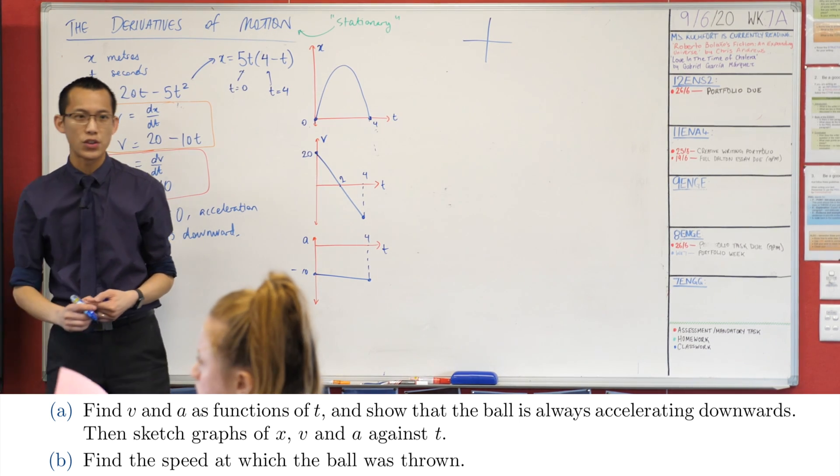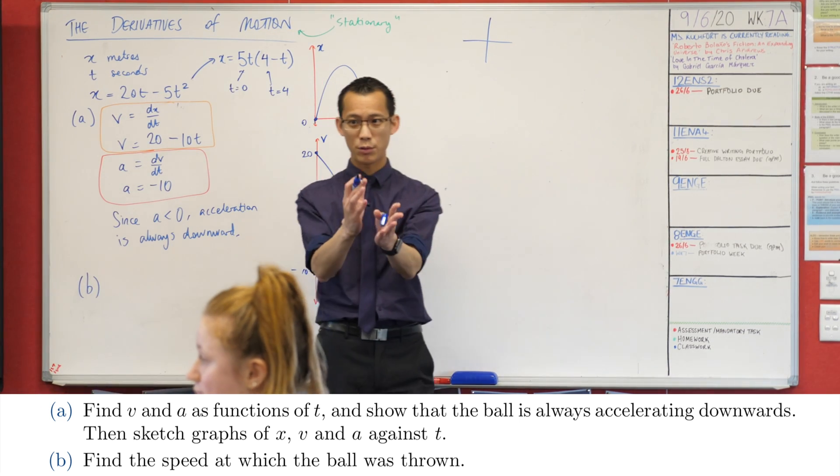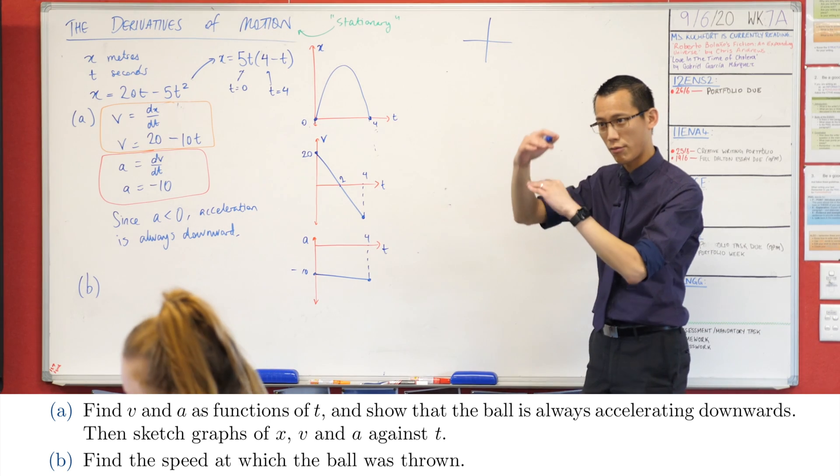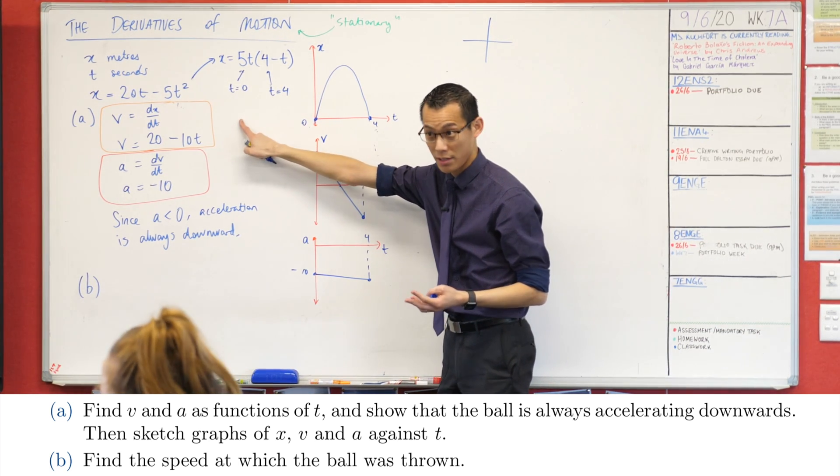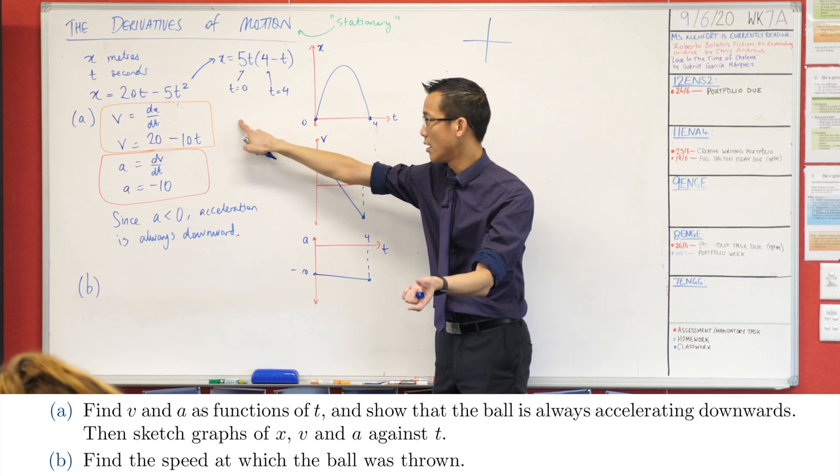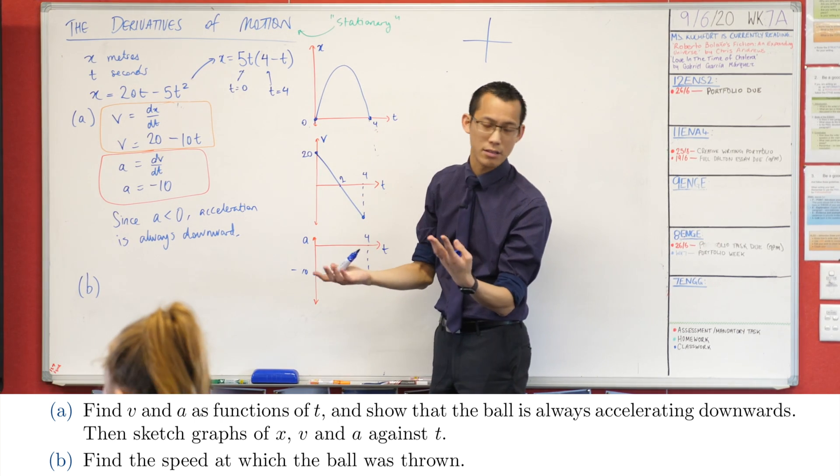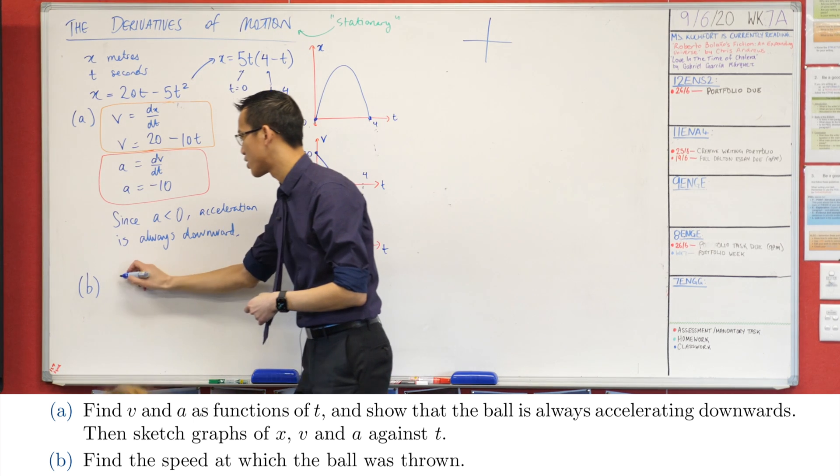The next thing says find the speed at which the ball was thrown. Have a look at your table. Speed. What's that closely related to? Velocity, right? It's going to be related to velocity. The difference is velocity includes up or down and speed doesn't. Okay, so let's go ahead and try and work out speed.